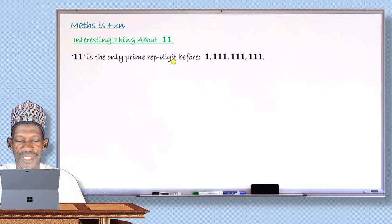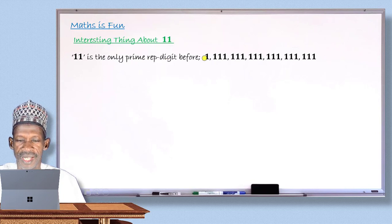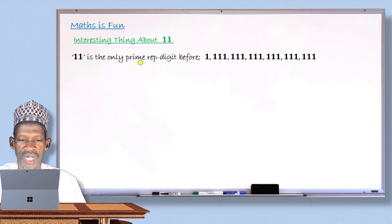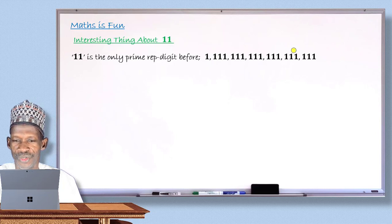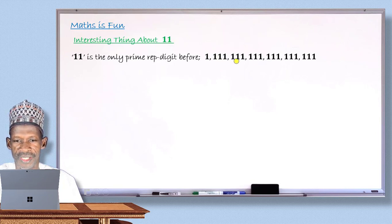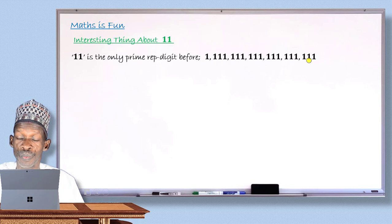11 is the only prime rep-digit number — 'rep-digit' meaning a number with repeated digits — before a very large prime. So 11 is the only rep-digit prime until you reach an astronomically large number, which is also prime and also a rep-digit. That large number reads: 1 pentillion, 11 quadrillion, 11 trillion, 11 million, 11 hundred 11. All other prime numbers before this large number are not rep-digits.